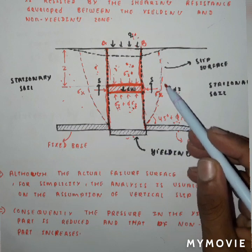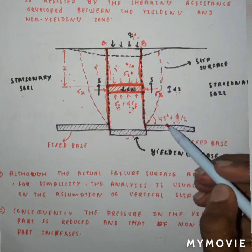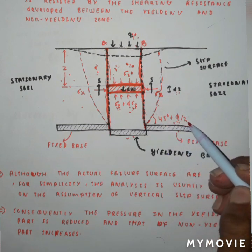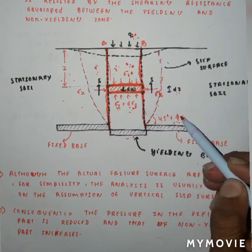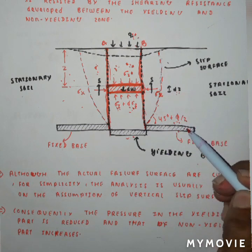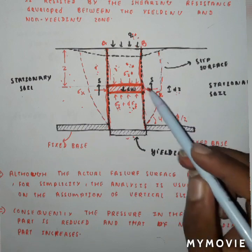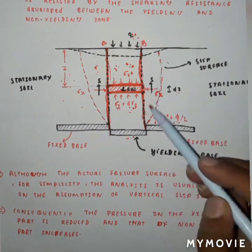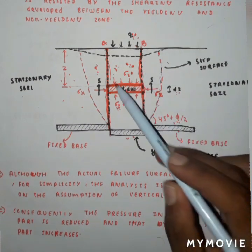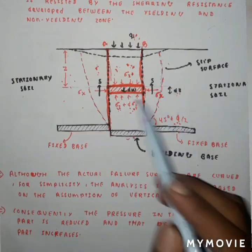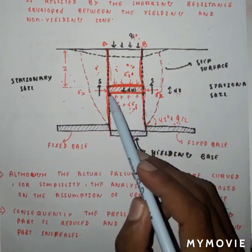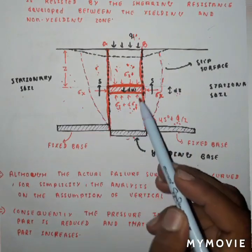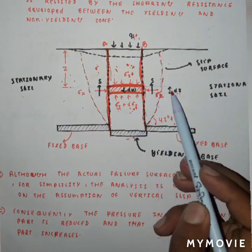The slip surface is curved in nature, which makes an angle of 45° + φ/2 with the horizontal, where φ is the angle of internal friction. But for simplicity, the slip surface is assumed to be vertical in nature.